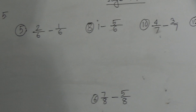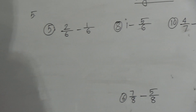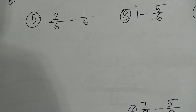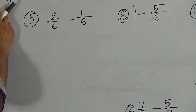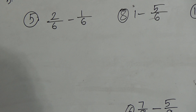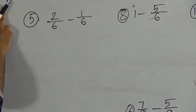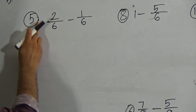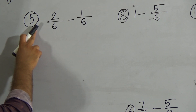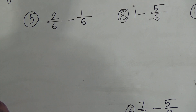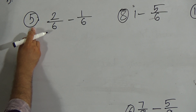First of all, open your elementary mathematics book at page 94. Look here — there are two subtraction questions in question number five. In question number five there are a lot of sub-numbers. From here we will solve question numbers 5, 8, 10, 12, and 6.